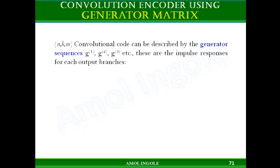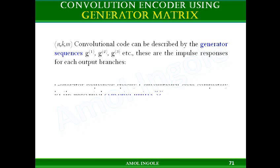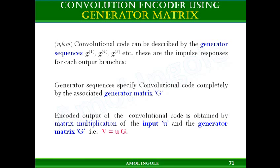In an earlier video we discussed that a convolution code can be described by the generator sequences. Generator sequences actually specify the convolution code completely by the associated generator matrix. We can use the generator sequence to construct a generator matrix which specifies the convolution. The encoded output of the convolutional code is obtained by matrix multiplication of the input bit stream and the generator matrix.